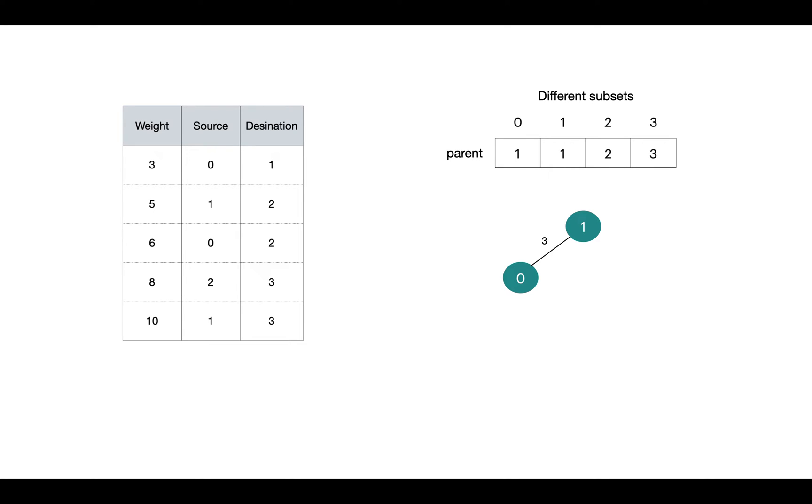Now next is 1-2. We check in which subsets these vertices are. Both are in different subsets, so we take union and make 2 as parent of 1, and we have updated the array as well. 1 will belong to the subset 2 now.